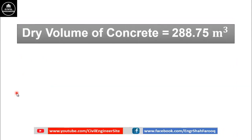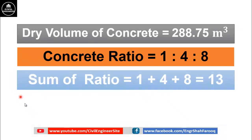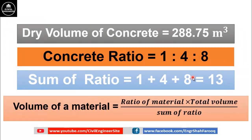Dry volume of concrete required for this PCC work is 288.75 cubic meters. Here M7.5 grade concrete is used having ratio 1:4:8. Now we will calculate the sum of ratios, because we will use it in upcoming calculations. Sum of ratios will be equal to 1 plus 4 plus 8 which is equal to 13. The quantity of a material is calculated using this equation: volume of material equals the ratio of that material — 1 for cement, 4 for sand, 8 for coarse aggregate — multiplied by total dry volume divided by sum of ratios.